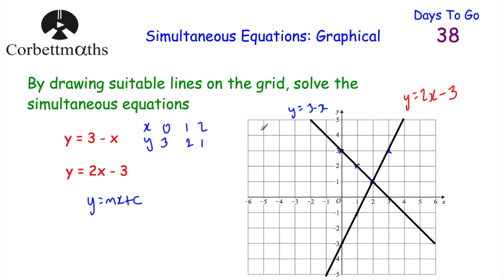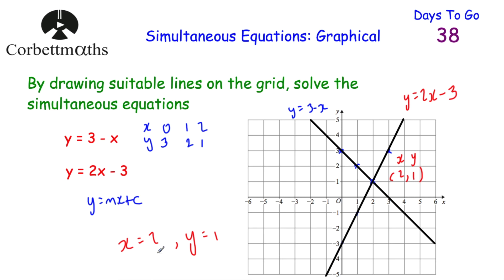We've been asked to solve the simultaneous equations. The solution is the intersection point, which is the point (2, 1). So x is equal to 2 and y is equal to 1. That's our answer. To solve simultaneous equations graphically, we just draw them and find where they intersect.